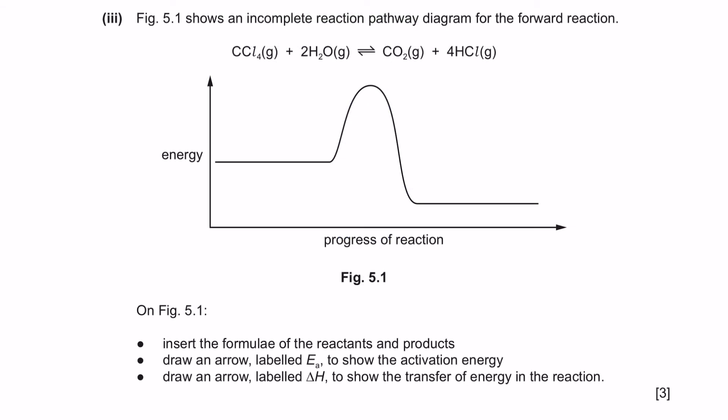Next, part 3. Figure 5.1 shows an incomplete reaction pathway diagram for the forward reaction. On figure 5.1, insert the formula of the reactants and products. This is very simple. You're just going to write them like this. Next, draw an arrow labeled activation energy to show the activation energy. Activation energy is always from the base of the reactant until the hump of the graph. So you'll label this as your activation energy. Next, label theta H to show the transfer of energy in the reaction. Transfer of energy starts from the reactant level until the product. So you can show the energy change has reduced and label it as theta H.